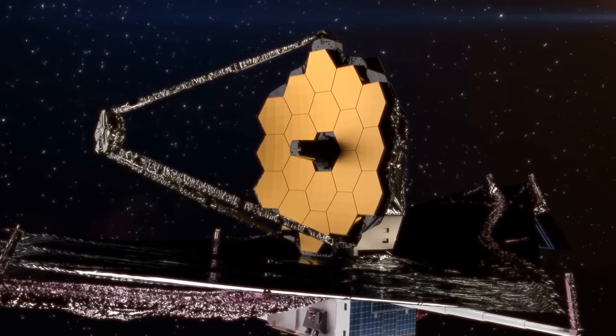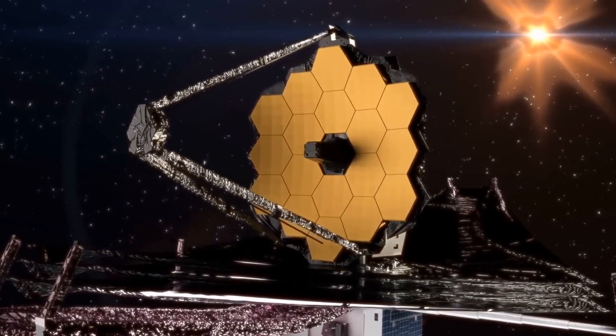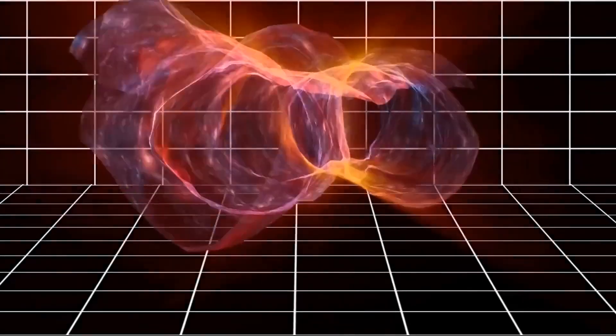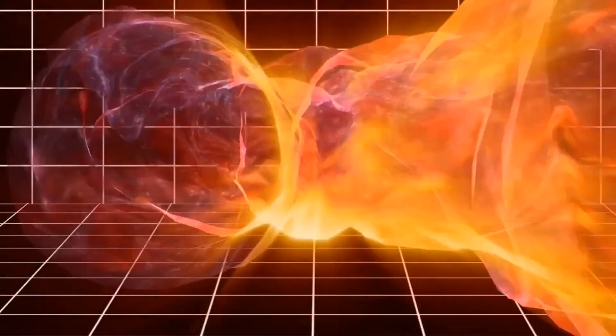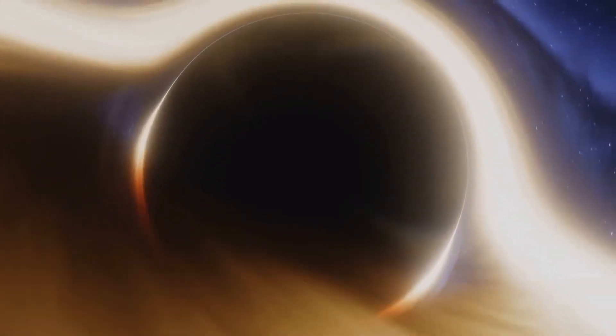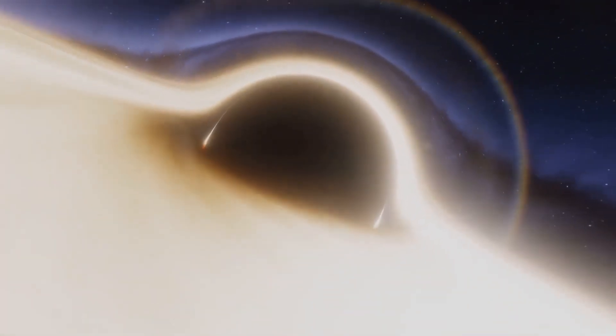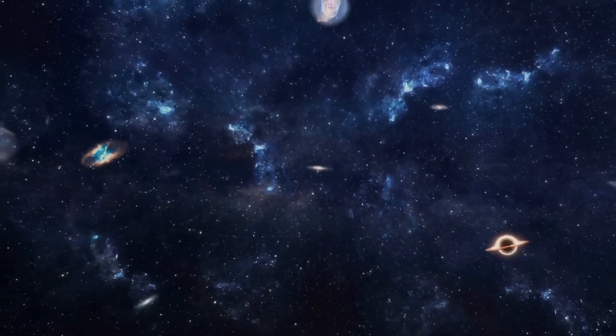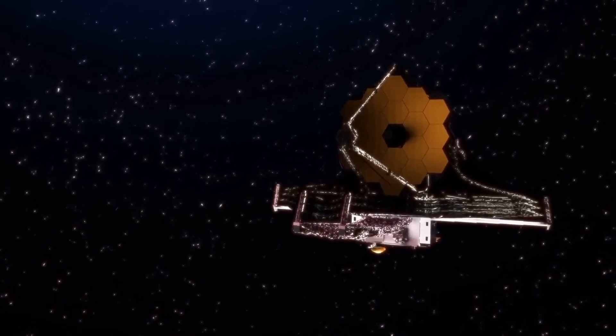The James Webb Space Telescope has not only discovered the oldest black hole, but also provided new information about the nature of these cosmic giants. It has shown that black holes were much more common and massive in the early days of the universe than we previously thought. So far, researchers assume that black holes formed when massive stars collapsed on themselves at the end of their life cycle, resulting in a point in space where gravitational forces become infinite. But the discoveries of the James Webb Telescope don't quite fit this image.